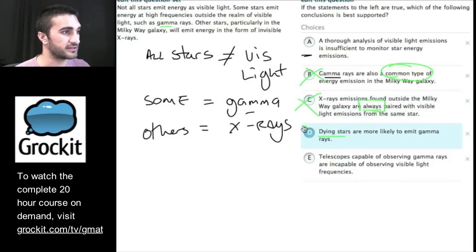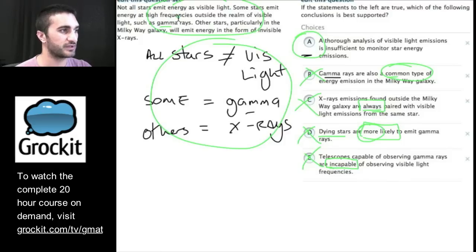Dying stars. Okay. Didn't see that mentioned. Can't point to it. We're pretty much done. Are more likely. This is more likely. So again, we're seeing this word more. It means something. And it's not even in there. So I can't support this answer choice. Telescopes capable of observing gamma rays are incapable of observing visible light rays. Another extreme word, incapable. Where does it say this? I can't point to it. I think I'm going to get rid of this. I can point to A. I can point to it in my own paraphrasing. I can point to it in here. I'm going to go with A.